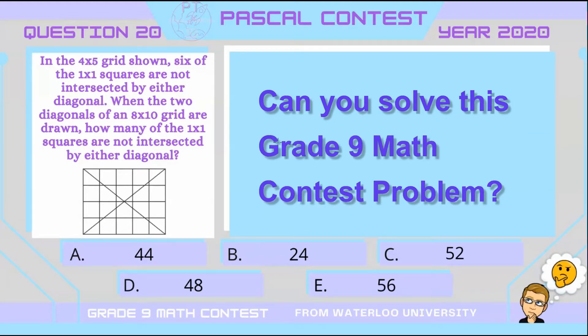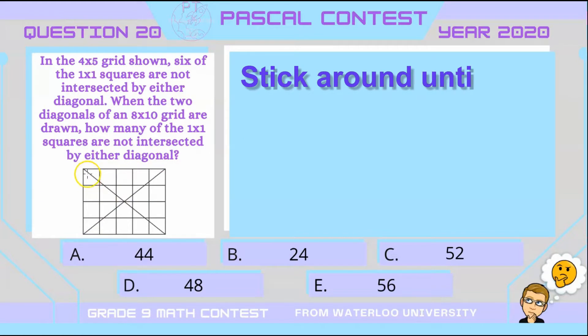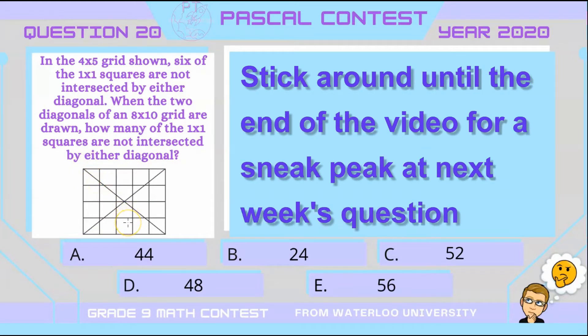This is a Grade 9 Math Pascal contest question, and in it here we have a 4x5 grid, where we have individual 1x1 squares and a diagonal connecting the corners.